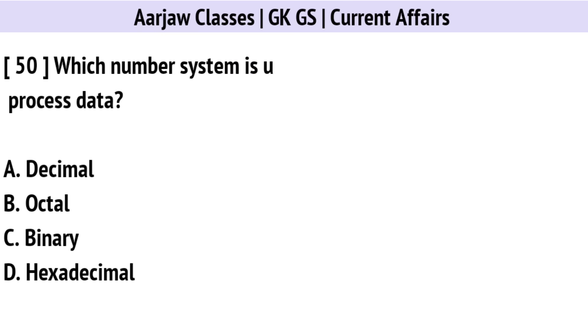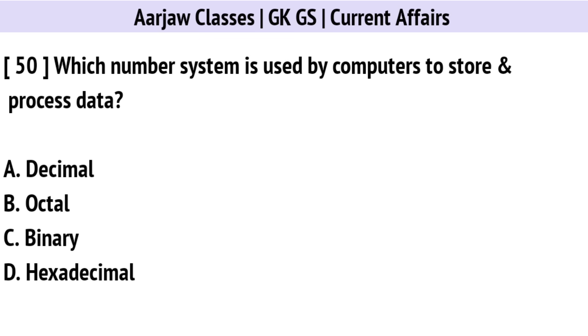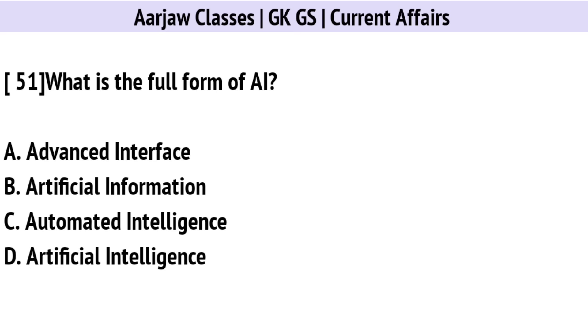Which number system is used by computers to store and process data? The correct option is C: Binary.